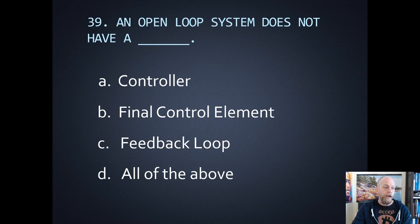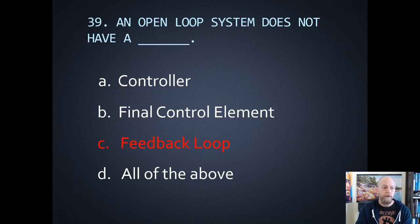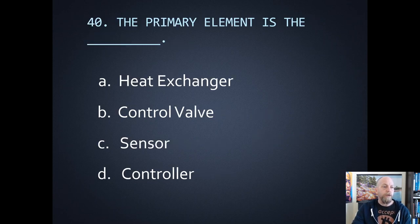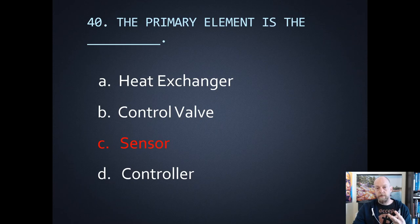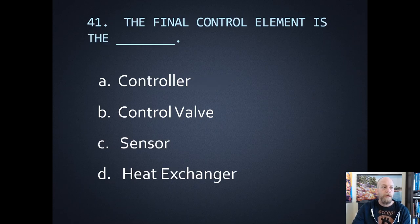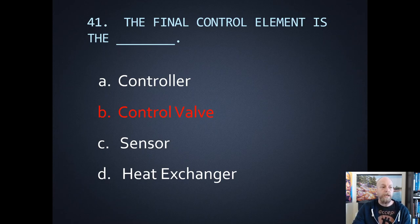Number thirty-nine: an open loop system does not have — controller, final control element, feedback loop, or all the above? I would say feedback loop. The main thing that is missing is a sensor — an open loop system is just a manually controlled system. Number forty: the primary element — the first thing in the loop — the name for that is a sensor. All different types of names: transducer, sensor, primary element, measurement device — all those correspond to the primary element. The final control element is the last thing in the line; we send a signal out to the field to the control valve or actuator. Another name for the final control element is an actuator — a valve, a motor, or a heater.